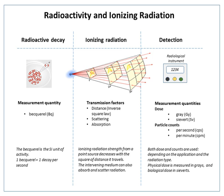Conversion factors: 1 Curie equals 3.7 × 10¹⁰ Becquerels. 1 MBq equals approximately 0.027 millicuries.